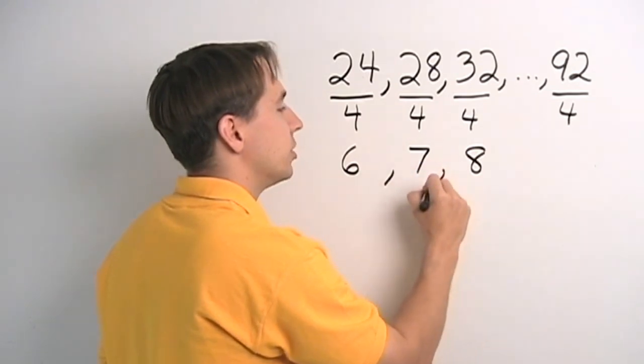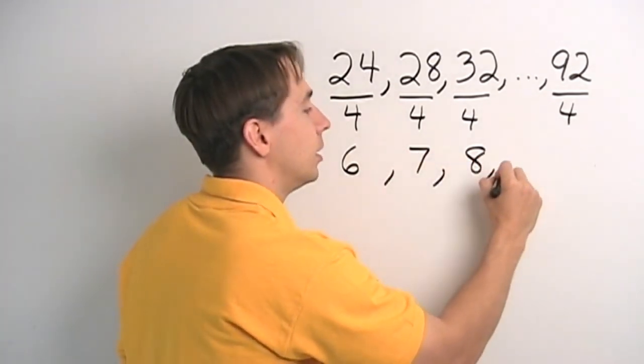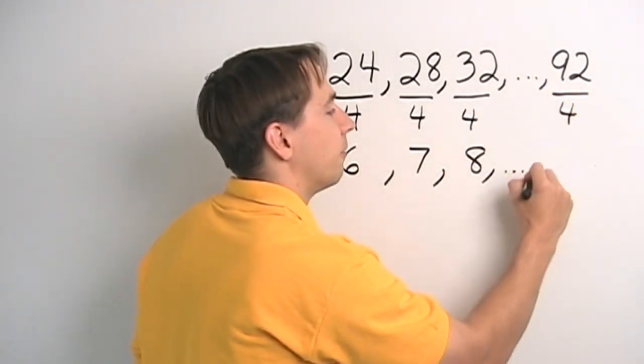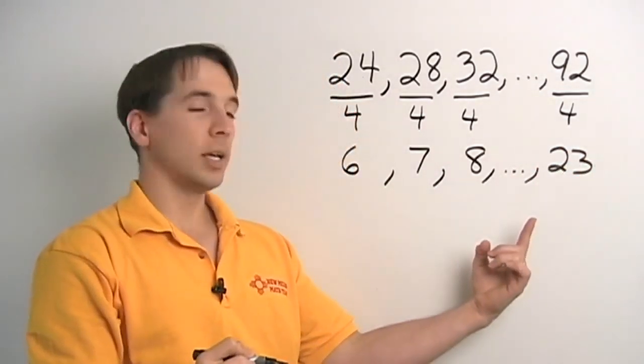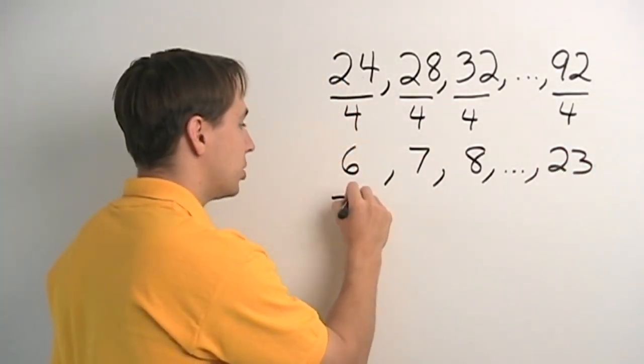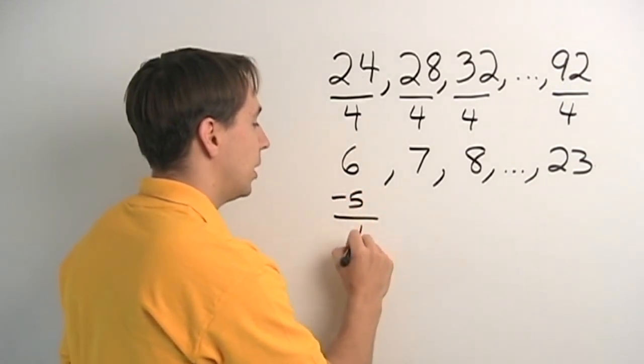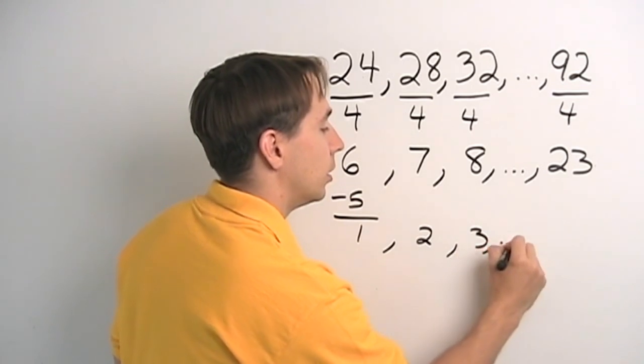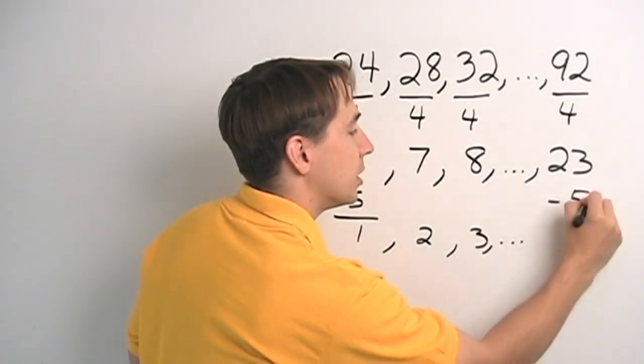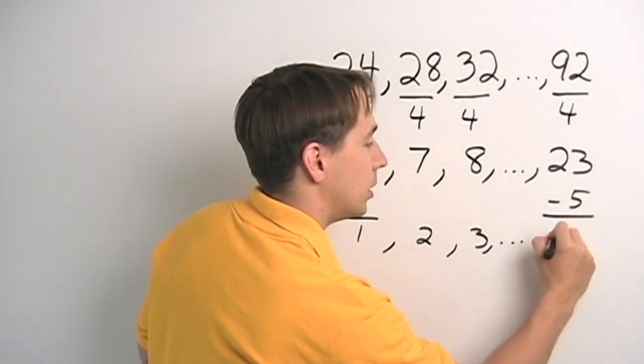And now our list is 6, 7, 8. And that goes on up to 92 divided by 4 is 23. And this is a list we know how to deal with. We can subtract 5 from each number in this list, and that'll give us our 1, 2, 3.